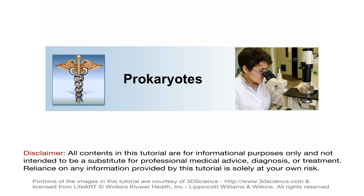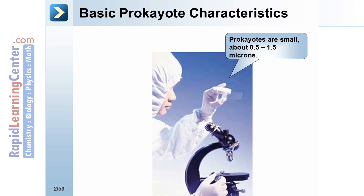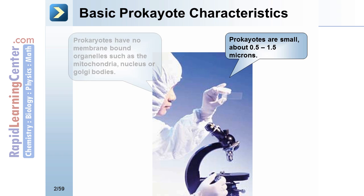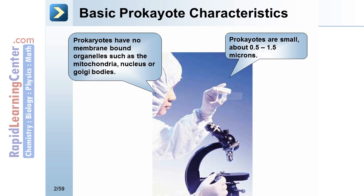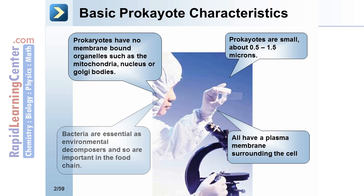Prokaryotes. Basic prokaryote characteristics: prokaryotes are small, 0.5 to 1.5 microns on average. They have no membrane-bound organelles, such as mitochondria, nucleus, or Golgi body. All have a plasma membrane surrounding the cell. Bacteria are essential as environmental decomposers and are important in the food chain, and are prokaryotes.